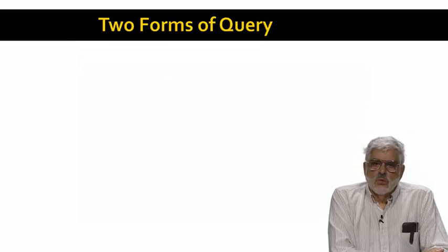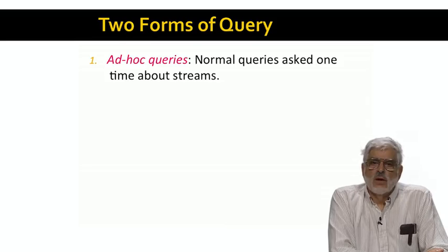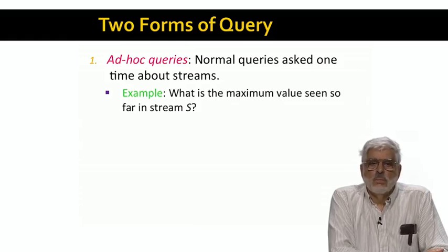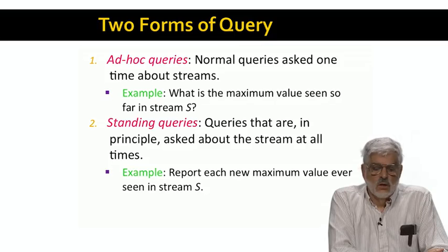Streams can be queried in two modes. The first is similar to the way we query a database system. You ask a query once and expect an answer about the state of the system at the time you ask the query. For example, what is the maximum value seen in the stream from its beginning to the exact time the query is asked? This question can be answered by keeping a single value, the maximum, and updating it, if necessary, each time a new stream element arrives.